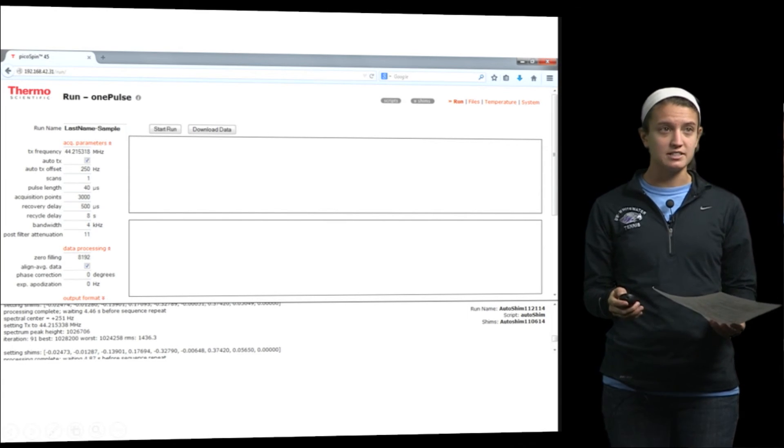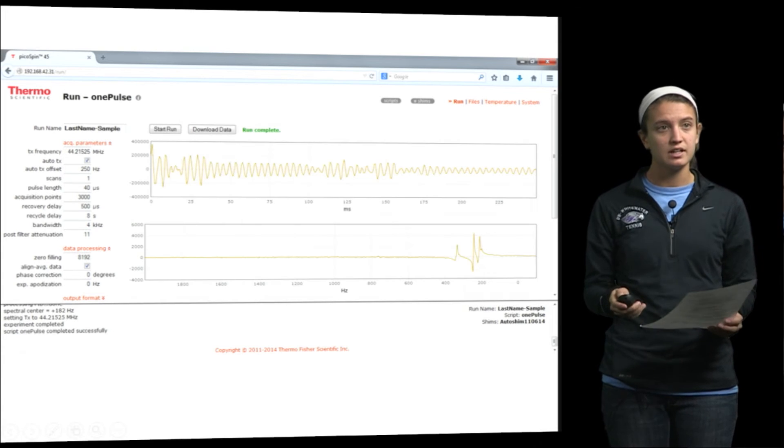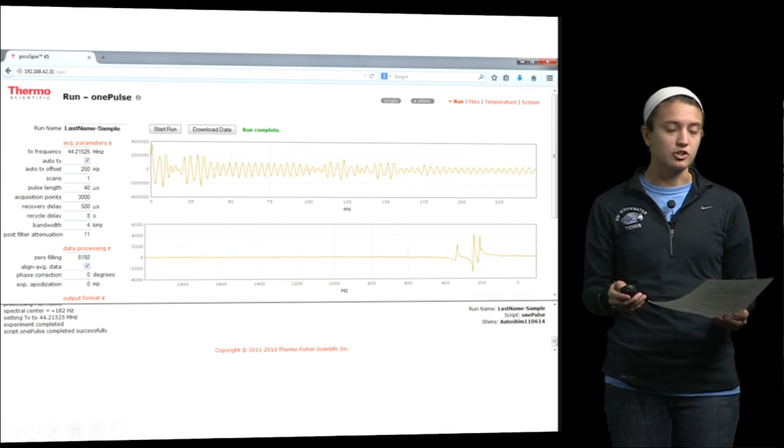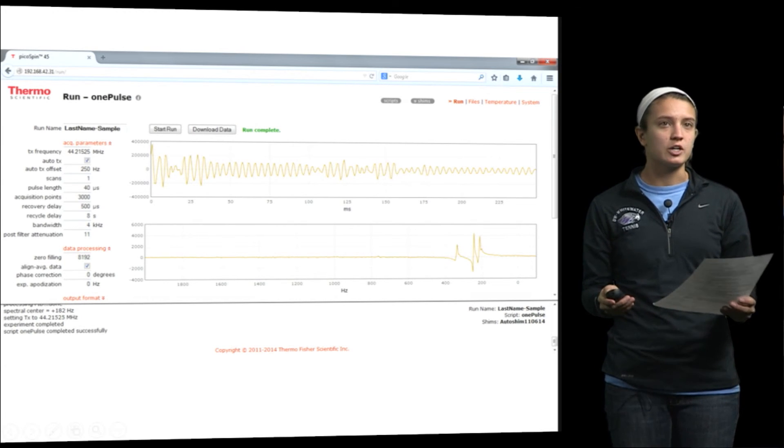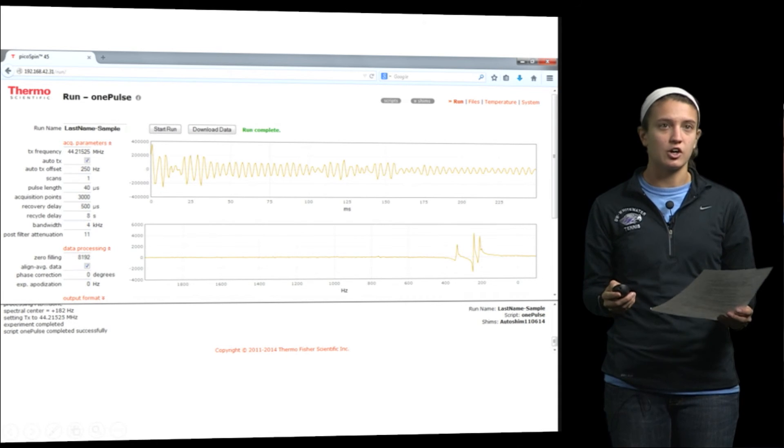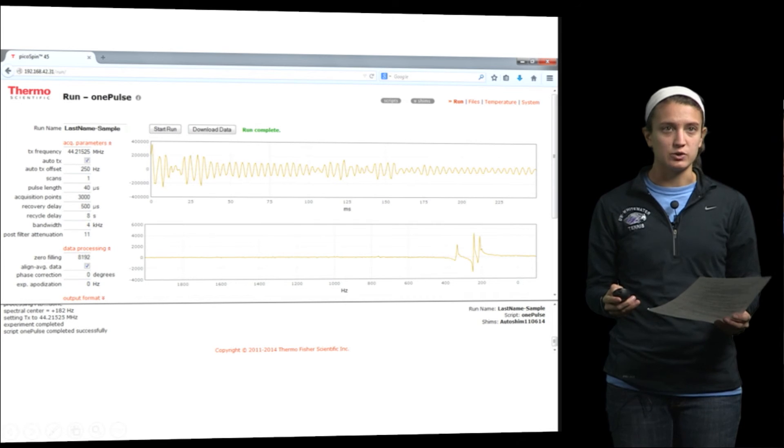So once they are all set, click on start run. And then when the spectrum shows up, check to make sure that all the peaks are between 0 and 500 hertz. If they are not, you are going to want to adjust them by changing the value of the auto TX offset to ensure that they are in the right position. You can change the spectrum as needed until you have a good spectrum.